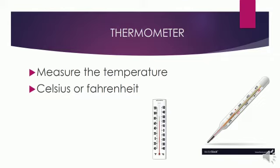Meteorologists use thermometers to find out how hot it is or if it is below freezing. Doctors use thermometers to check your body temperature. A very high or low body temperature means you are not safe. Here I show two thermometers: the one on the left we use for body temperature, and the one on the right we use for the environment temperature.